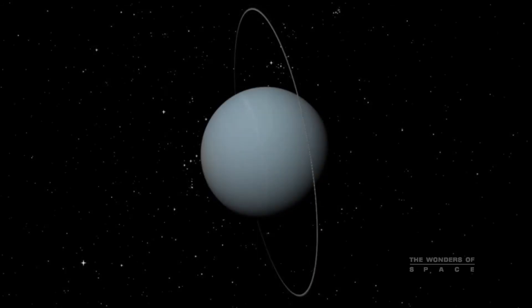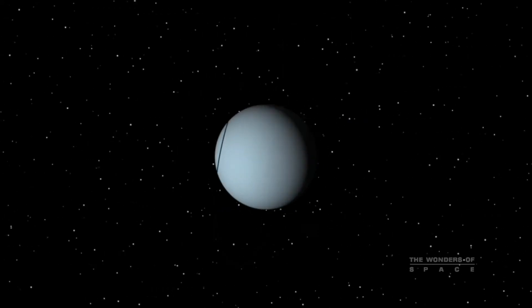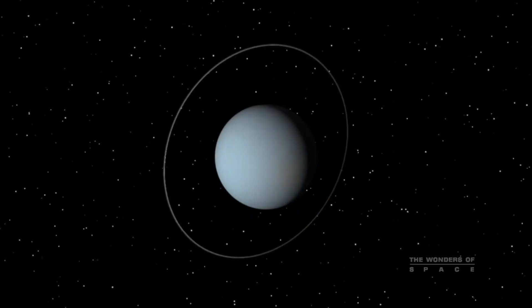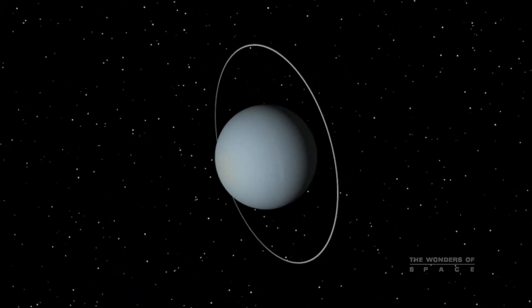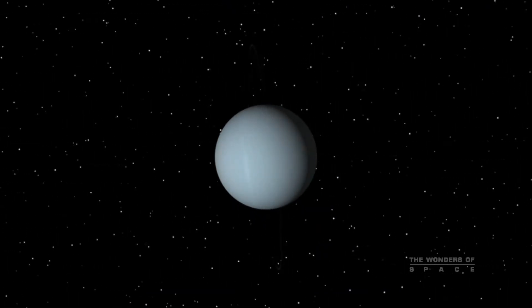Uranus rolls on its side. It is an icy giant of a planet, the third largest in the system. Like the other giants, Uranus has a ring system and numerous moons. It is the seventh planet out, and it orbits the Sun at a distance of 1.9 billion miles. A year on Uranus lasts 84 Earth years.